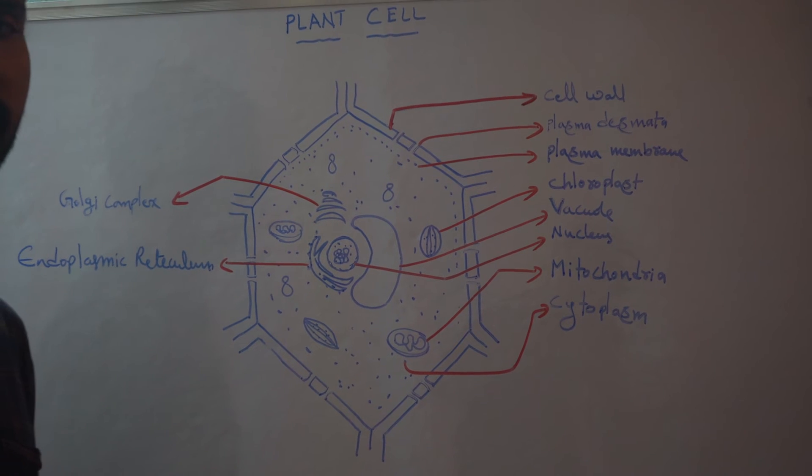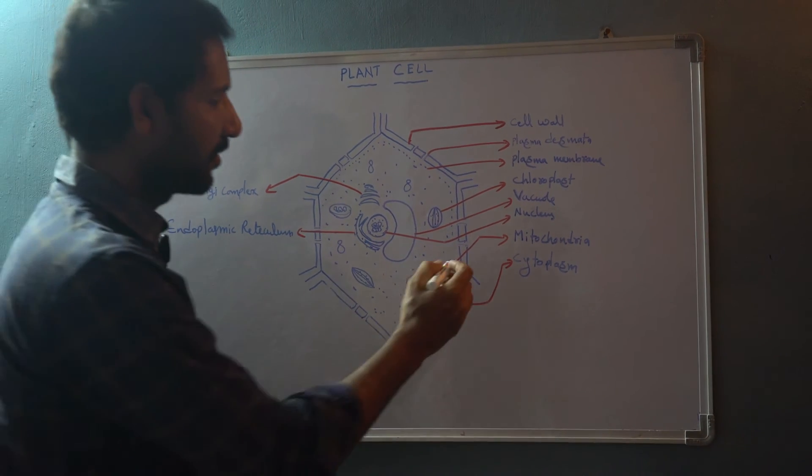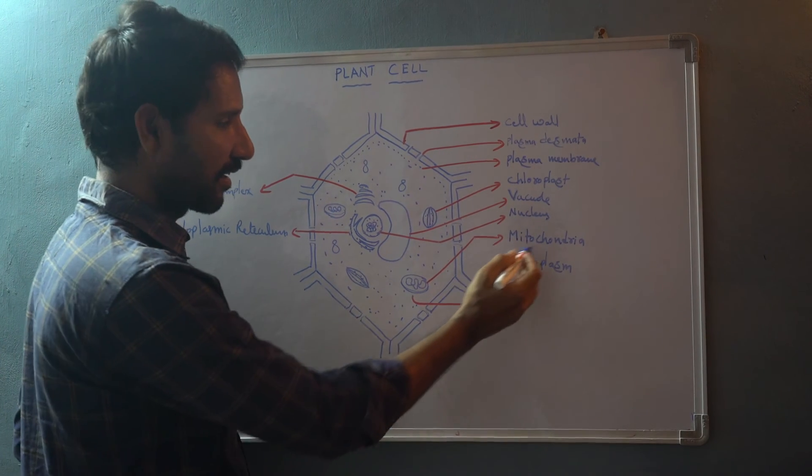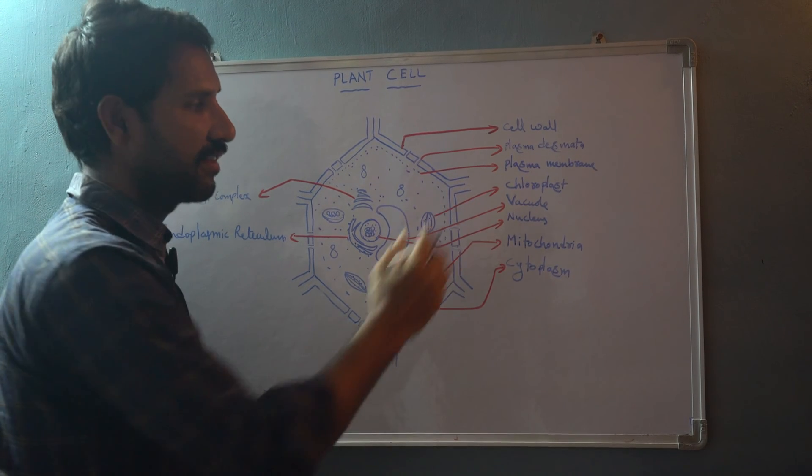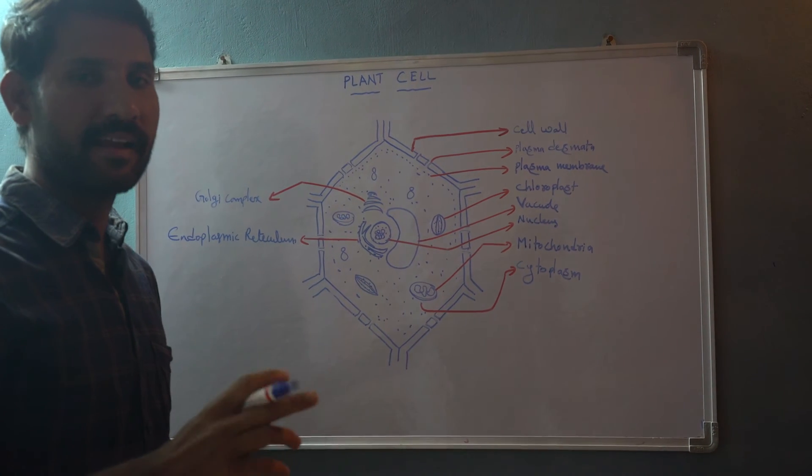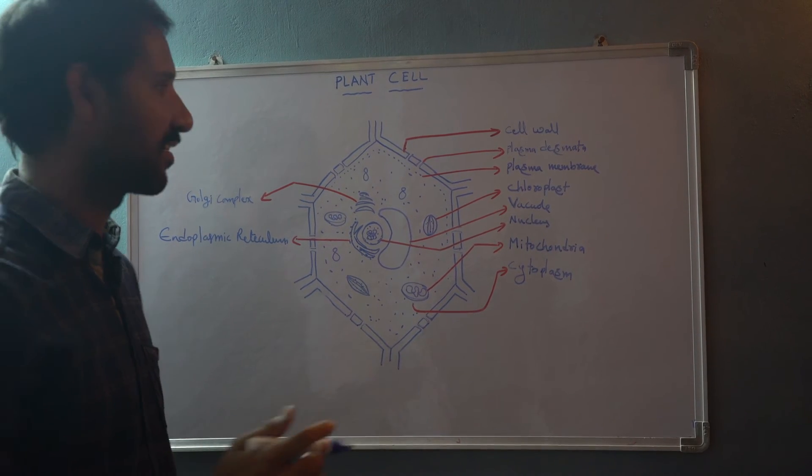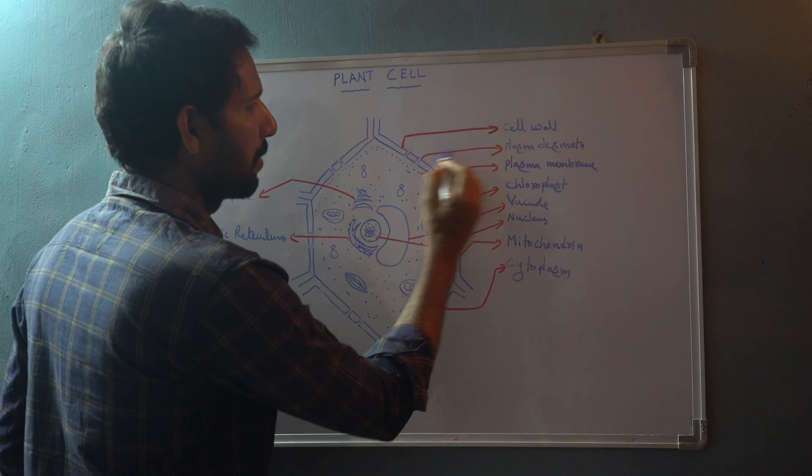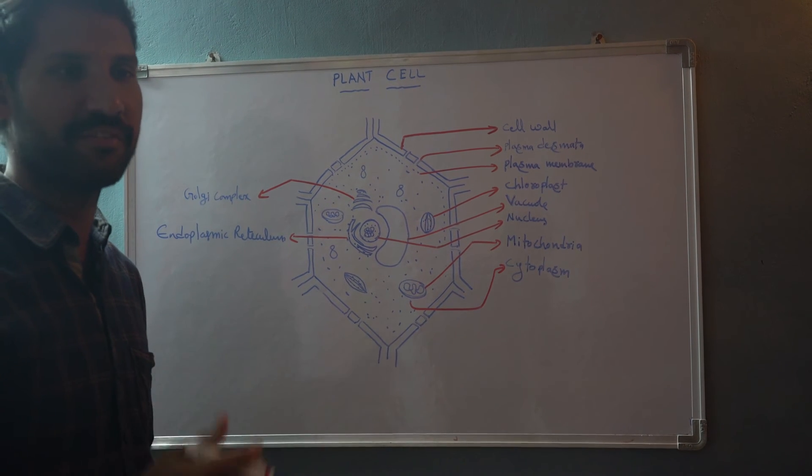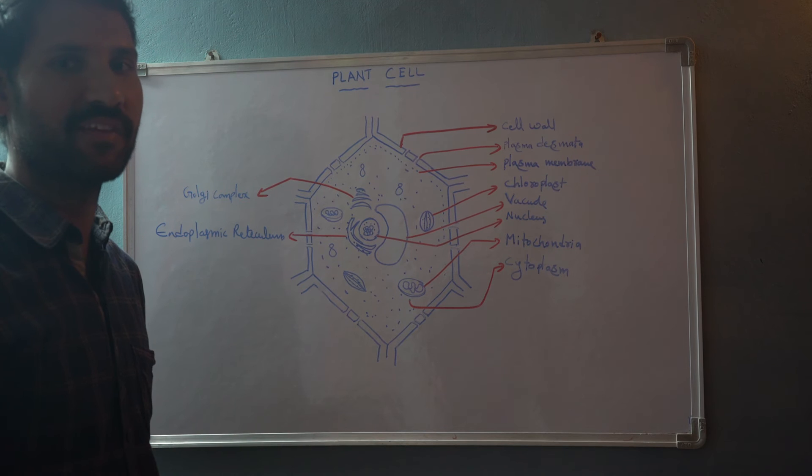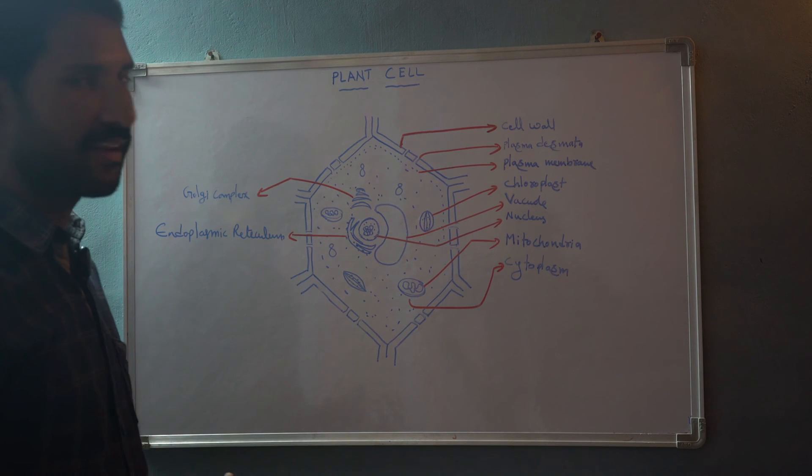Chloroplasts are responsible for the photosynthesis process. In the cell, other organelles like mitochondria are present, and we can see there is an interconnection between two adjacent plant cells with the help of plasmodesmata, which facilitate exchanging various materials between the two neighboring cells.